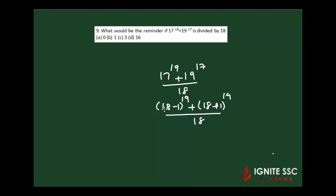Again, 18 divided by 18 leaves remainder 0. So now this is (-1)^19 plus (1)^17 whole divided by 18, which is nothing but minus 1 plus 1. The remainder is 0. This is a very simple question.